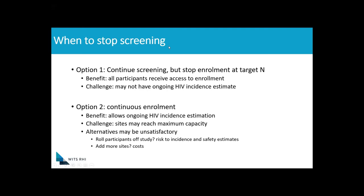The third issue to consider is when to stop screening. Option one is the traditional approach, which is to continue screening but stop enrollment at the target enrollment number. The benefit is that all participants receive access to enrollment. The challenge is that you may not have enough of an HIV incidence estimate because you're truncating the number of people being screened. The alternative is to try a continuous enrollment approach. The benefit is that it allows ongoing HIV incidence estimation throughout both the follow-up and enrollment periods. One challenge is that sites may reach maximum capacity, and there are potentially ways to address that, although they may not be entirely satisfactory.